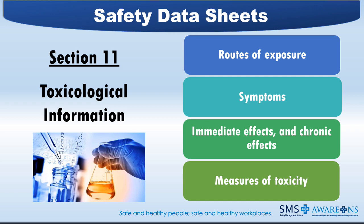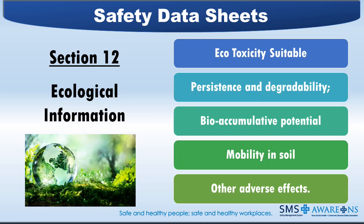Section 11 — Toxicological Information is used primarily by medical professionals, occupational health and safety professionals, and toxicologists. A complete and comprehensible description of the various health effects and the available data used to identify those effects should be provided. Under GHS classification, the relevant hazards for which data should be provided include: information on the likely routes of exposure via inhalation, ingestion, skin, and eye contact; symptoms related to the physical, chemical, and toxicological characteristics; delayed and immediate effects and chronic effects from short-term and long-term exposure; and numerical measures of toxicity, including acute toxicity estimates.